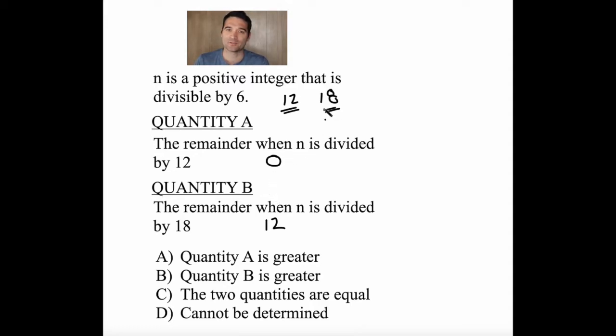Let's find out what happens when we plug in 18. When 18 is divided by 12, 12 goes into 18 one time, and there are 6 left over. But when 18 is divided by 18, there are 0 left over, meaning that in this case, quantity A is greater.